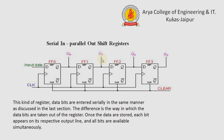The second type is the serial input parallel output shift register. Here the input data is given in serial form as before, but the output is taken after each flip-flop, meaning the output is in parallel form. The difference is the way in which the data bits are taken out of the register. Once the data is stored in each flip-flop, each bit appears on its respective output line and all bits are available simultaneously.